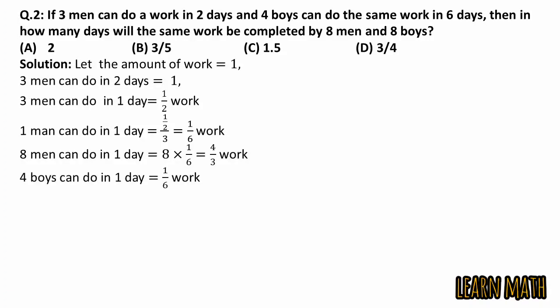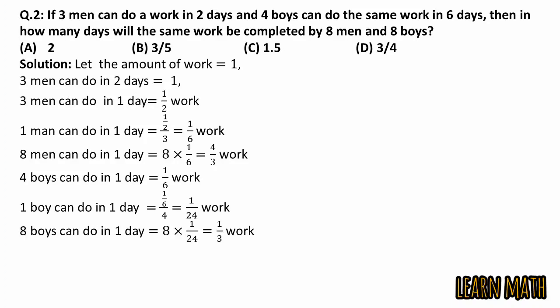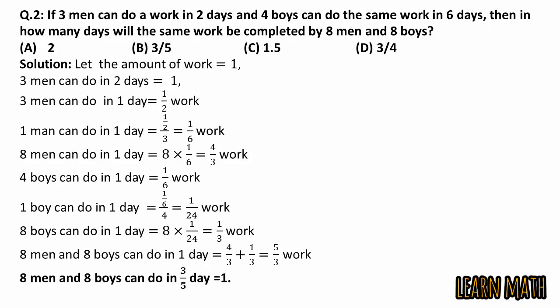Since 4 boys can finish the work in 6 days, 4 boys do 1/6 of the work in 1 day. So 1 boy does 1/24 of the work in 1 day, and 8 boys do 1/3 of the work in 1 day. Adding together, 8 men and 8 boys can do 4/3 + 1/3 = 5/3 of the work in 1 day. Since we need exactly 1 unit of work, multiplying by 3/5 gives 3/5 days. The correct answer is option B.